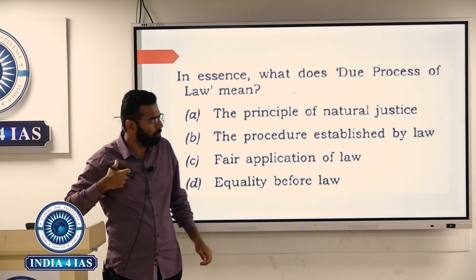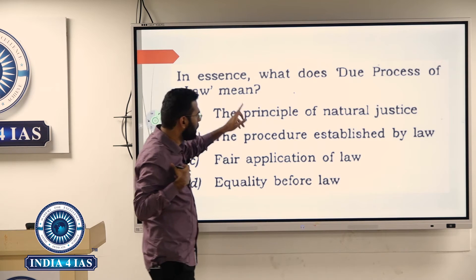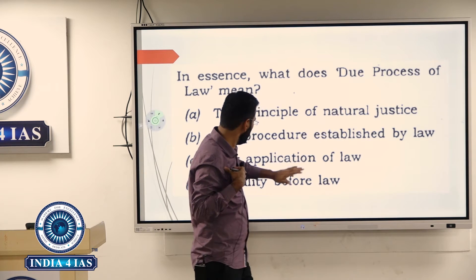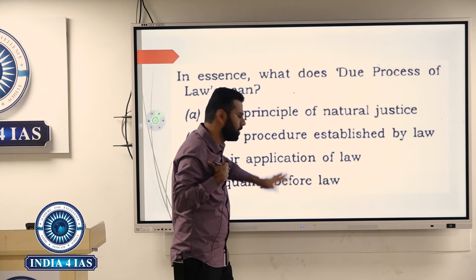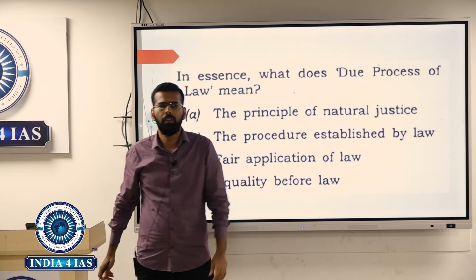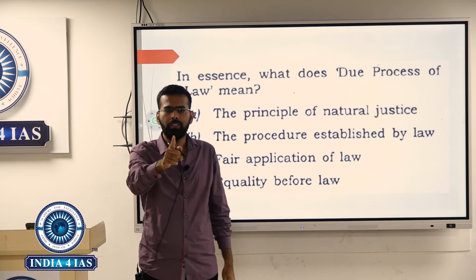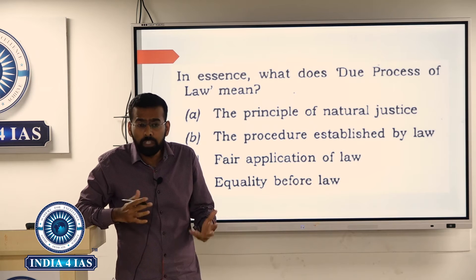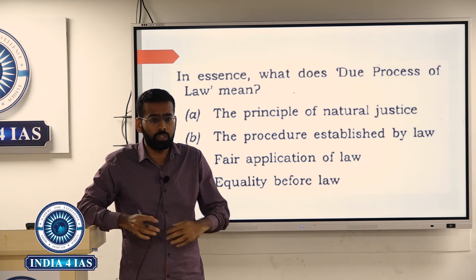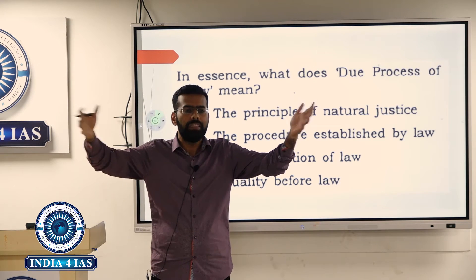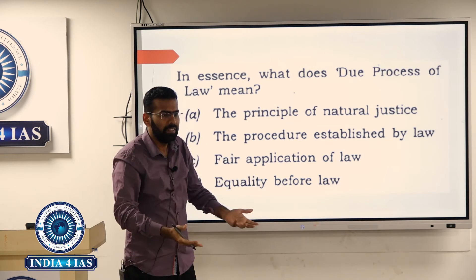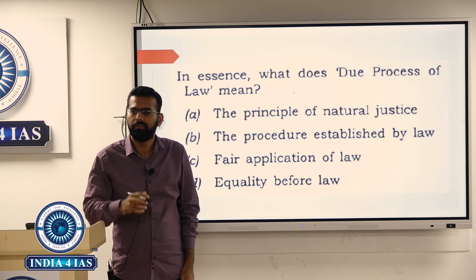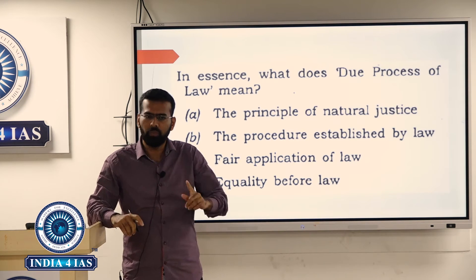The options are: kings employing women bodyguards; learned persons assembling in the royal court to discuss religion and philosophy; young girls keeping watch over agricultural fields, driving away birds and animals; and a king defeated in battle committing ritual suicide by starving himself to death.